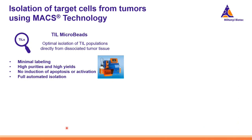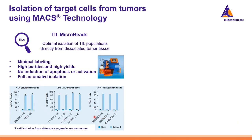We are focusing on the analysis of TILs within the tumor. The TIL Microbeads allow optimal isolation of TIL populations directly from the dissociated tumor tissue. These beads have been specifically titrated to extract the TILs from the tumor, since they are a rare population within this tissue, with only minimal labeling, and allow reaching high purities and high yields after isolation. The microbeads also don't induce any apoptosis or activation of the cells. Examples show different T cell populations isolated from different syngeneic mouse tumors, and after applying magnetic separation with TIL Microbeads, we were nicely able to enrich the purity of the cells above 80% in every case.